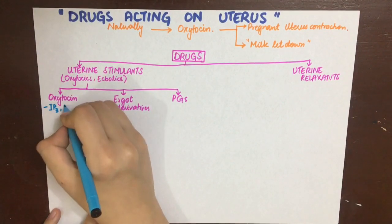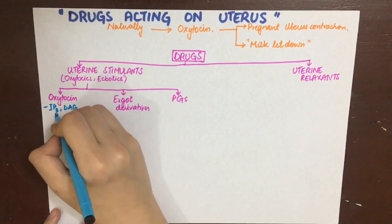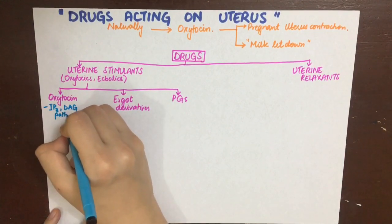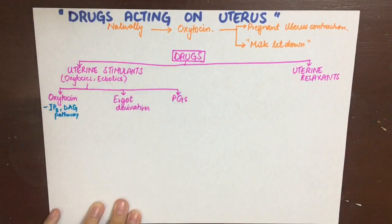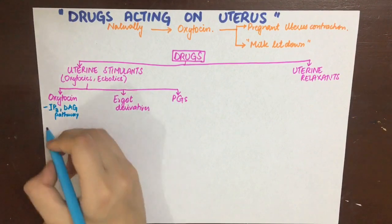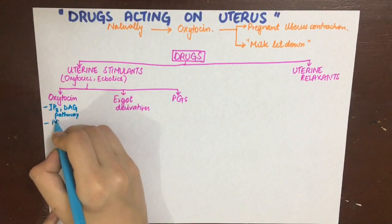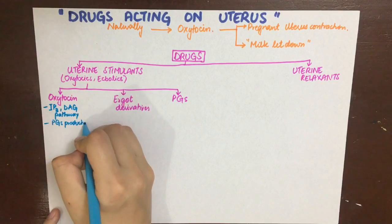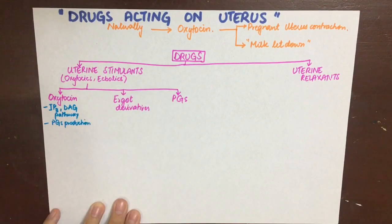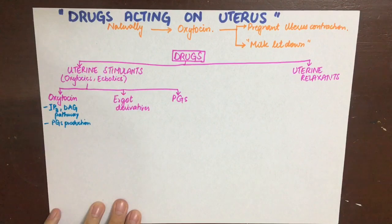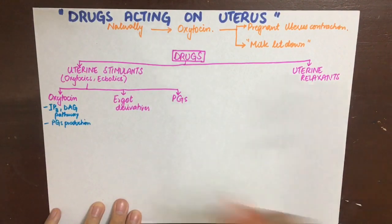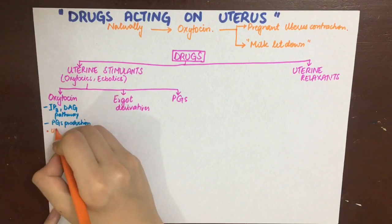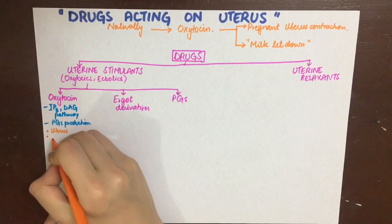The pregnant uterus in early pregnancy is fairly resistant to oxytocin, as oxytocin receptors gradually increase during pregnancy. In the last half and near term, there is a spike in oxytocin receptors. Oxytocin acts on the uterus via the IP3/DAG pathway, increasing intracellular calcium levels and causing contraction. Oxytocin also increases prostaglandin production by the uterus.